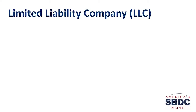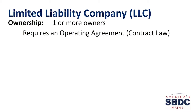Now the limited liability company, often referred to as the LLC. This one is one or more owners — unlike sole proprietor or partnership where it's based on how many owners, the LLC can be one or more. It does require an operating agreement. LLCs are under contract law. In Maine especially, even if it's one owner, an LLC still should have an operating agreement, which is the contract between the state and the business on how it conducts its business and what laws it's subject to.